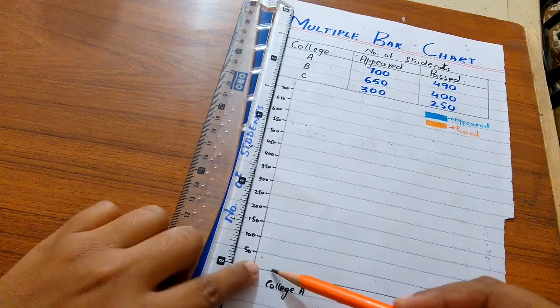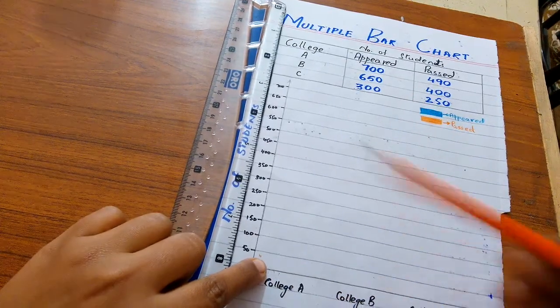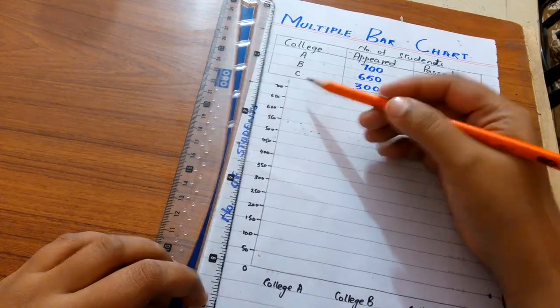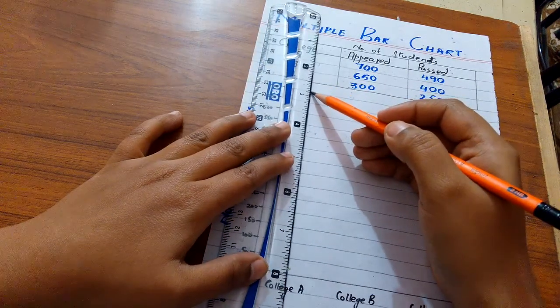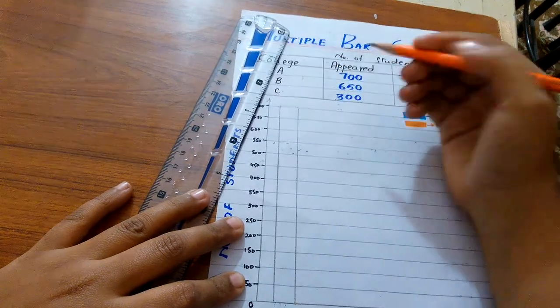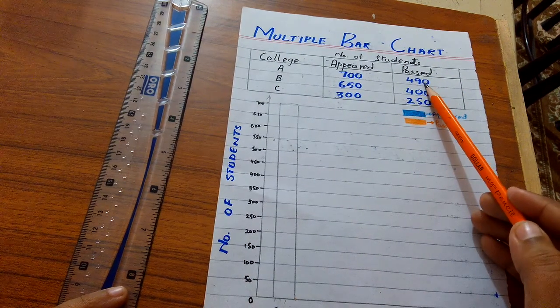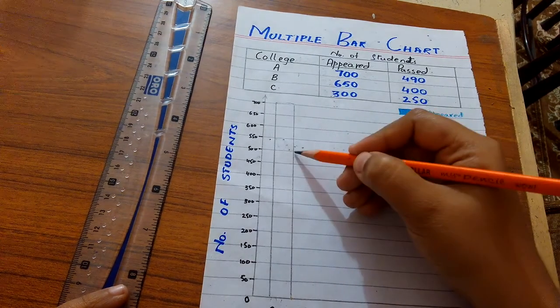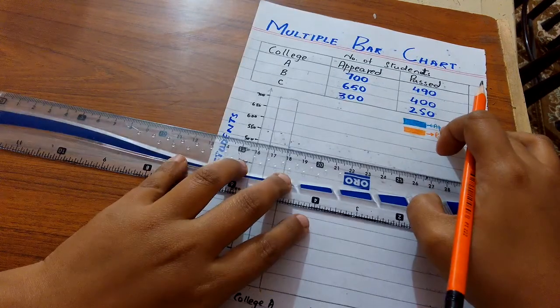First of all, I am going to construct a bar for students of college A who appeared in exams. Total number of students 700: 50, 100, 150, 200, and 700. Now the related phenomena is passed the exam, and the number of students who passed the exam is 490. So I construct both the bars combinedly or jointly.